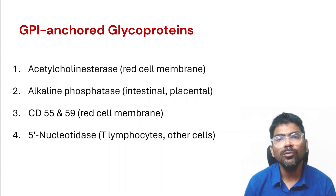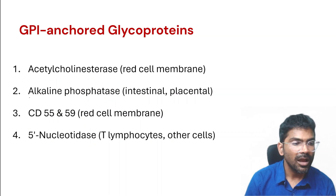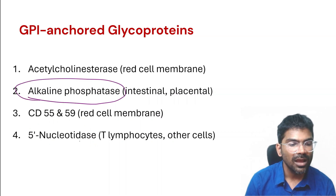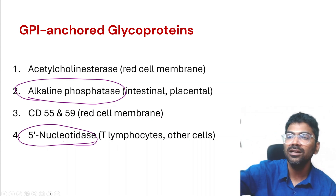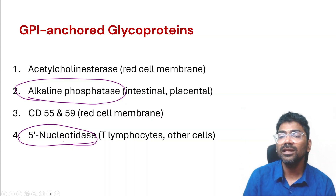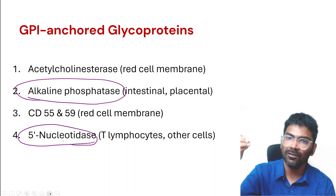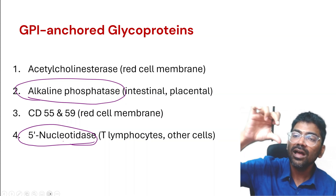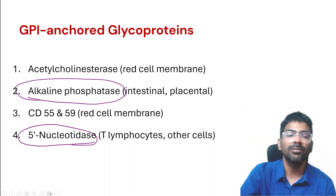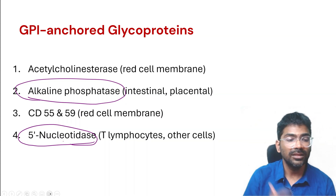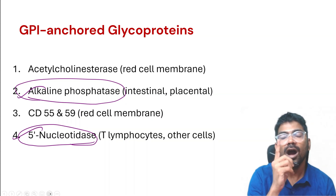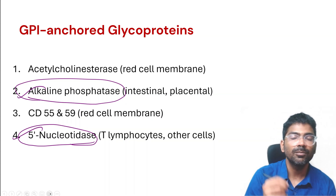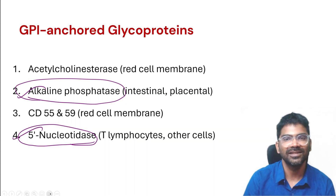One more clinically relevant point: alkaline phosphatase and 5'-nucleotidase are membrane-anchored proteins. Whenever there is biliary stasis, because of the detergent activity of bile, these anchored proteins are released from the membrane. They are therefore markers for obstructive jaundice and cholestasis.